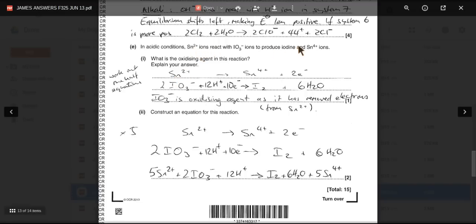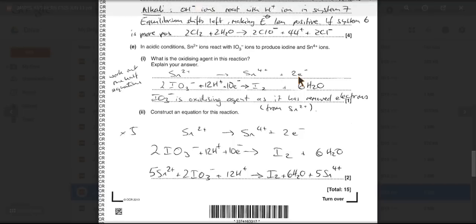So tin 2 plus to tin 4 plus. So there's your starting point. The atoms balance. And so we just put the electrons in to balance that one. And the IO3 minus ions turn into I2. So to get that one to balance, we need all of these things here. So we need to get the atoms to balance with water. That introduces H plus. And then once all the atoms balance, we balance the charge with the electrons.